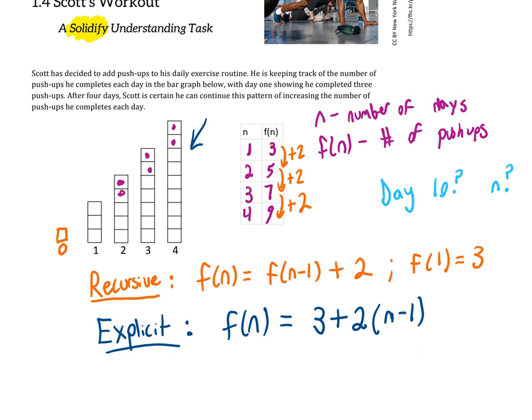You can expand this out to see another representation using the distributive property. We'd have 3 + 2n - 2. Three minus two is one, so we'd have 1 + 2n. And so those are equivalent representations in the explicit form.